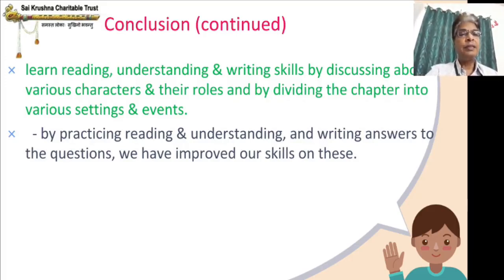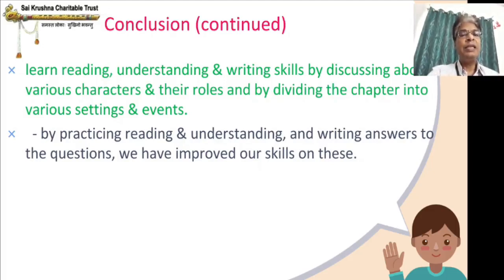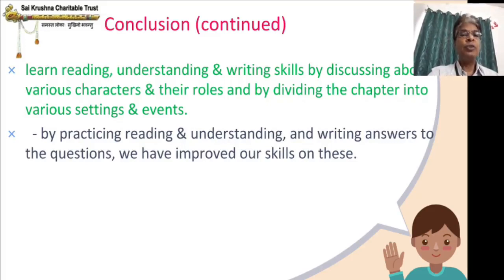I can give an example of the difference between knowledge and skill. Take a pencil — how the pencil works, what it is made up of, that is knowledge. It is information. Skill is how to hold the pencil and how to write — that is a skill. The ability to do something is a skill. The information which is existing, knowing about it or improving further in that, is called knowledge. So knowledge is information and skill is the ability to make use of the knowledge.